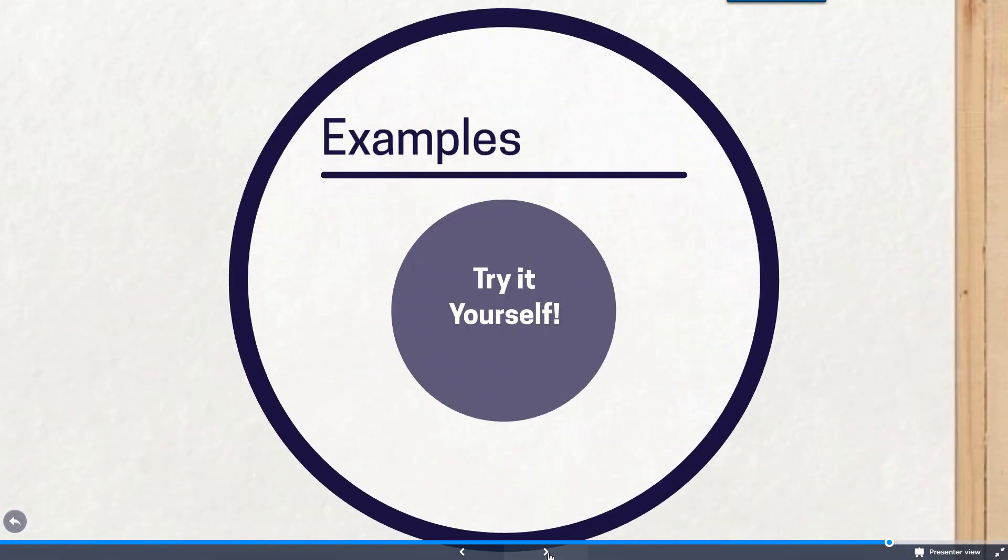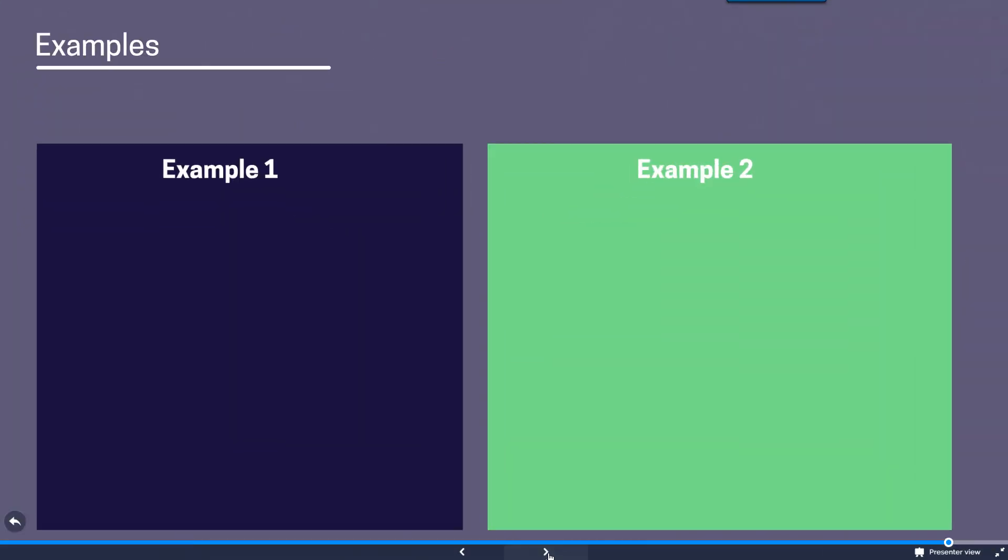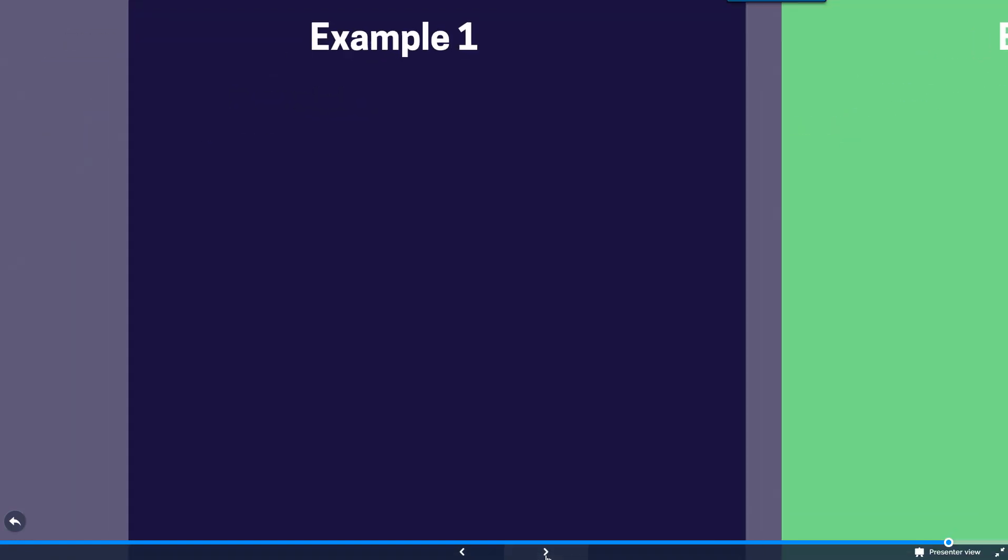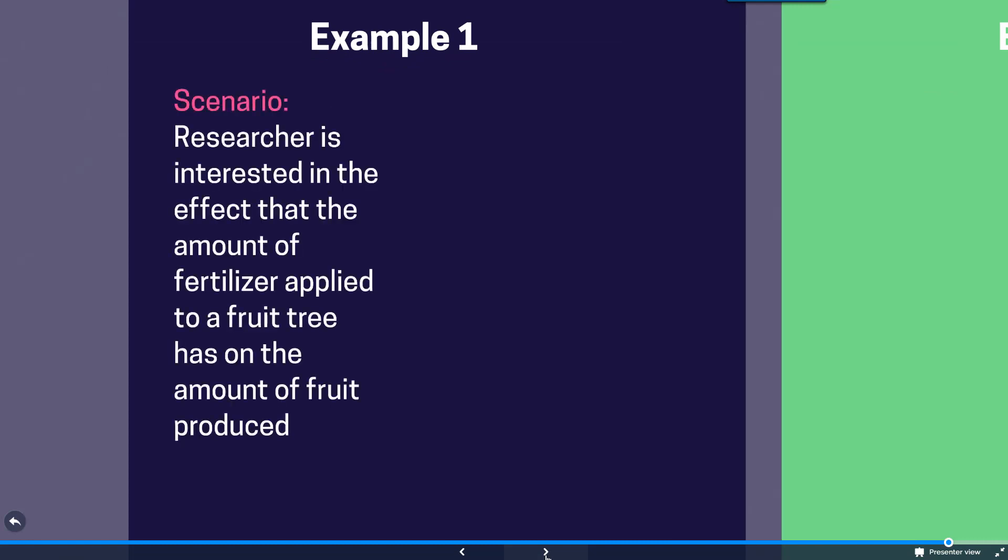And finally we have a couple different examples we can take a look at. And I'll give you an opportunity to try these out yourself a bit. So in these two examples or scenarios, I ask what are the independent, dependent, and control variables for each example. And what does a control group look like? So in our first example, example number one, we have a scenario where a researcher is interested in the effect that the amount of fertilizer applied to a fruit tree has on the amount of fruit produced. So I'm going to pause right here. If you need to pause a little bit longer in order to respond, go ahead and do that.